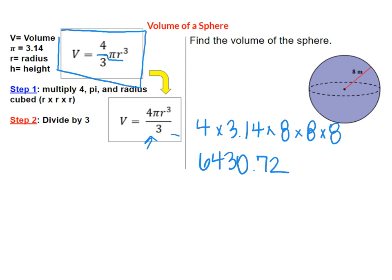Step two is that divide by three part because in the beginning of our formula we have four thirds pi r cubed. So we're going to divide this number by three. And we do get a repeating decimal here. We get 2143.57 with threes that follow it. So what we'll do is just round to the nearest hundredth place value which is this place value. Remember we go tenths and then hundredths. So my answer would be 2143.57 meters cubed for my volume.